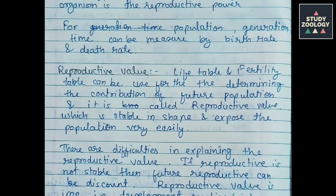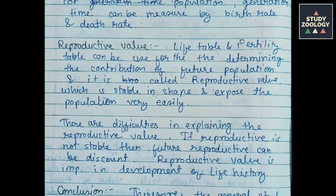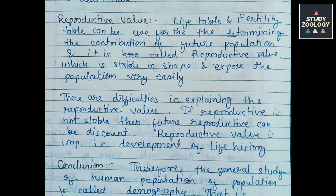Reproductive Value: Life table and fertility table can be used for redetermining the contribution of future population, and this is called reproductive value, which is stable in shape and exposes the population very easily. There are difficulties in explaining the reproductive value. If the population is not stable, then future reproductive value can be discounted. Reproductive value is important in the development of life history.